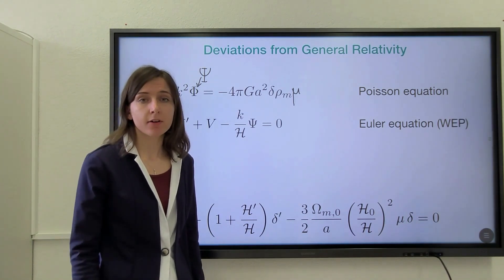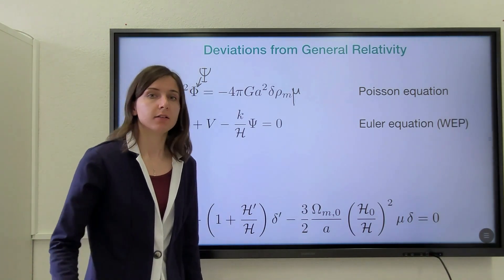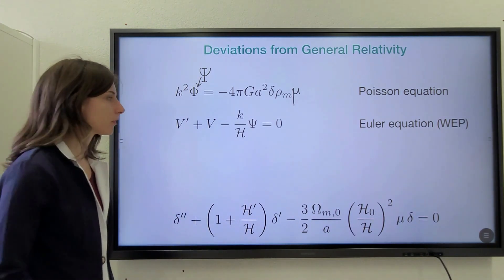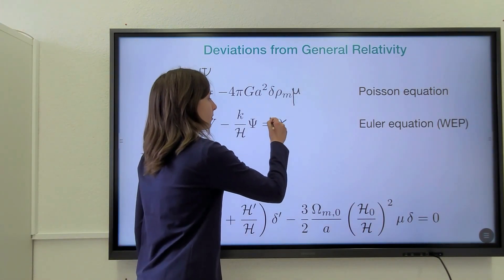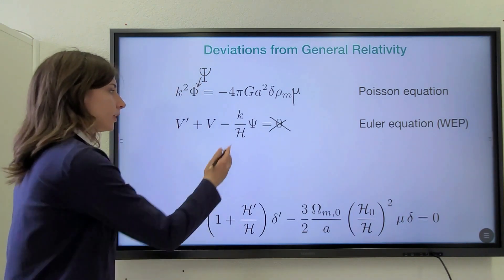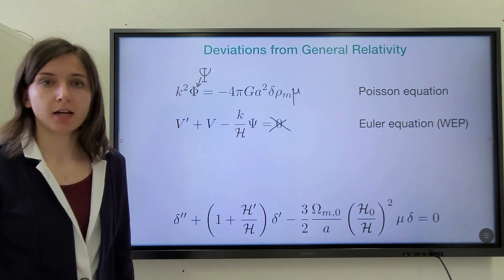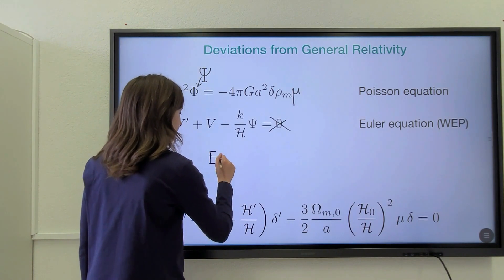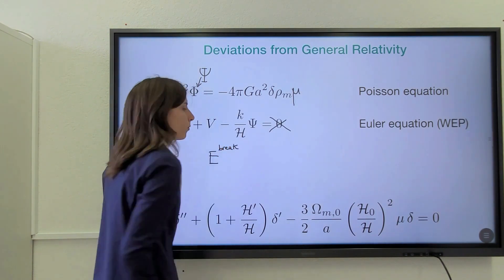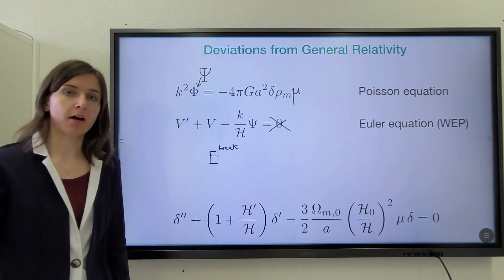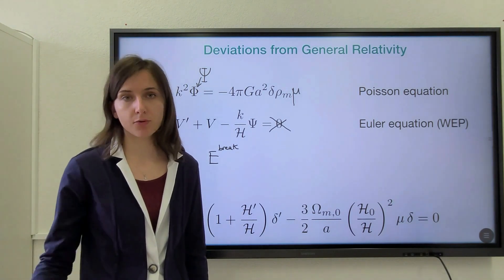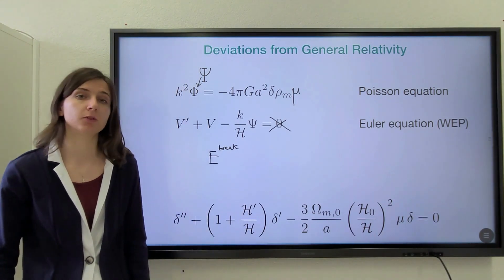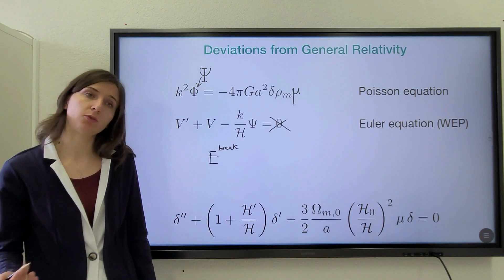And in fact, in several modified gravity theories, this assumption does not hold. And this can be parameterized by including a source term on the right-hand side of this equation, which we call E-break, which in the simplest scenario of an additional degree of freedom, which is non-minimally coupled to dark matter, contains two terms.